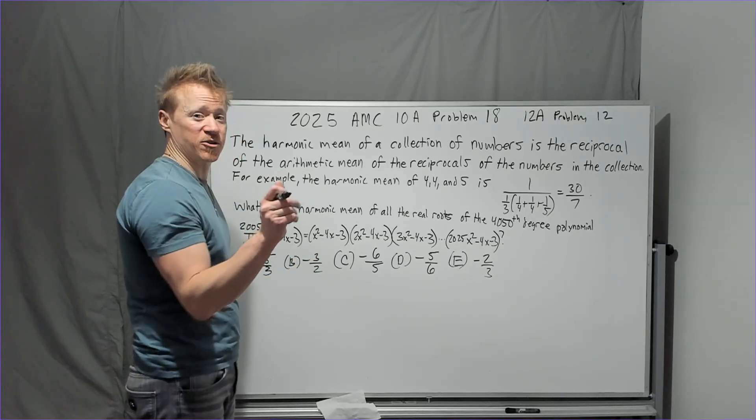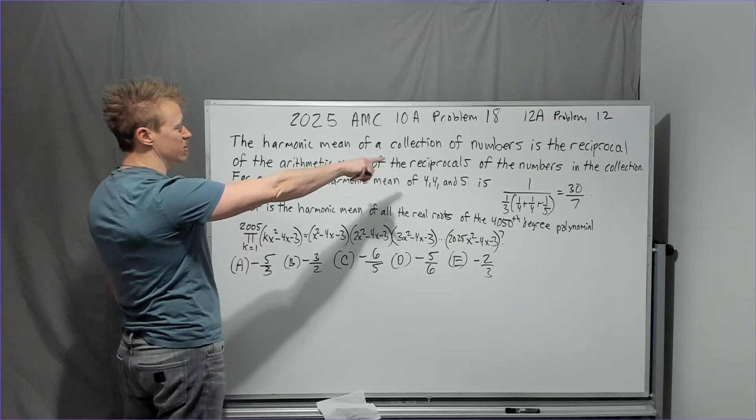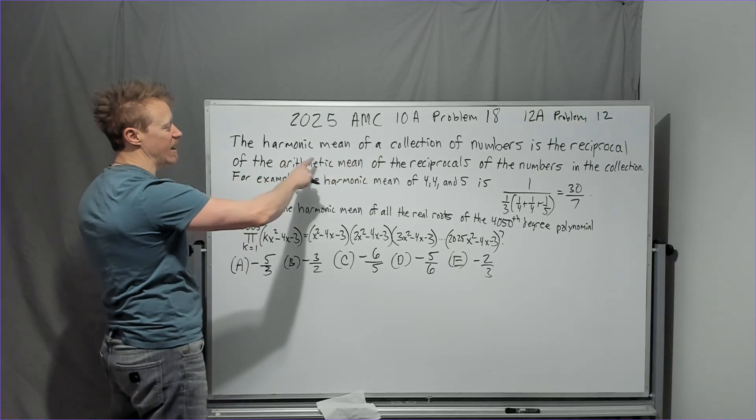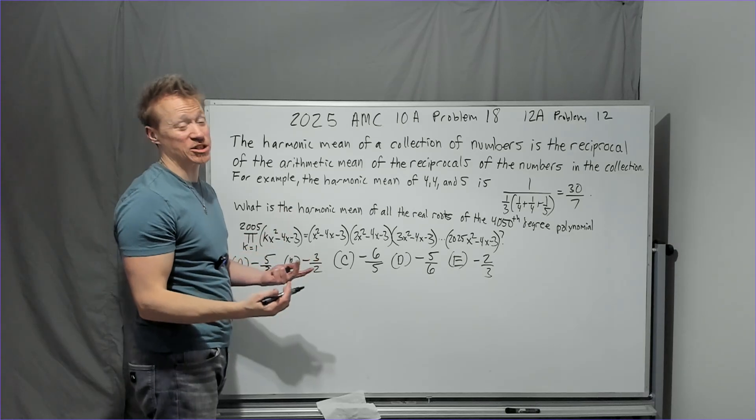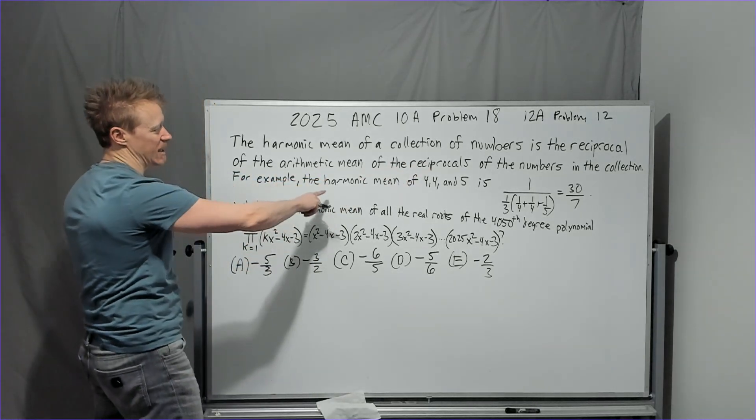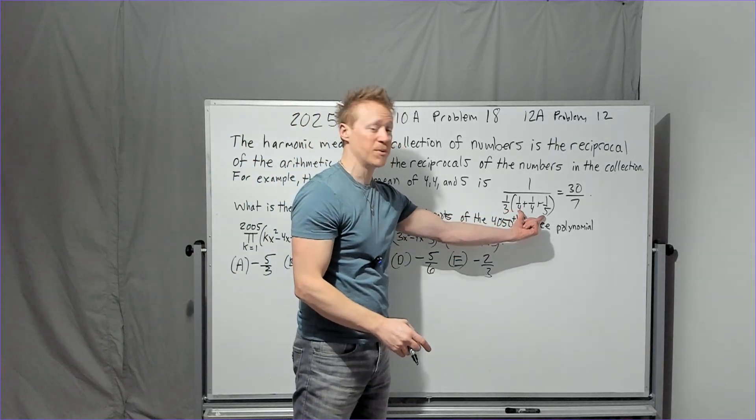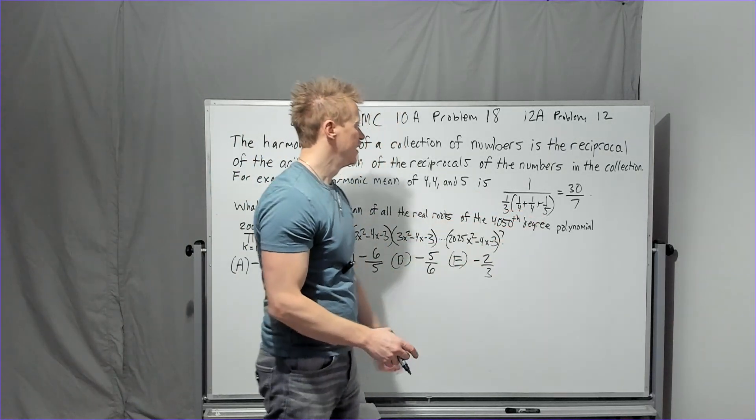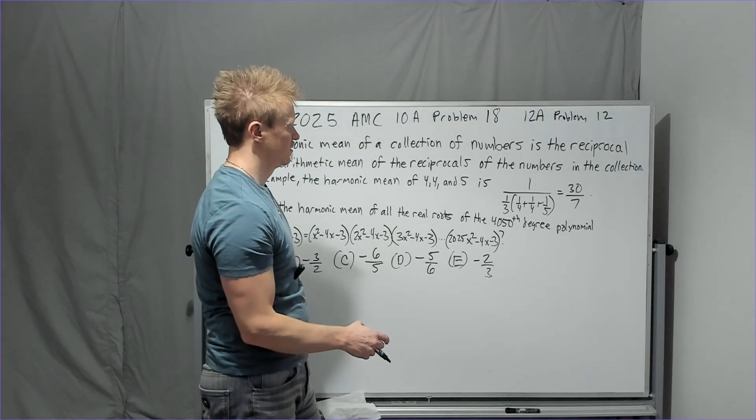The harmonic mean of a collection of numbers is the reciprocal of the arithmetic mean of the reciprocals. It's the reciprocal of the average of the reciprocals is a nice way to think of that in the collection. For example, the harmonic mean of this, you take one-third of the reciprocals, which is their average, and then it's, well, hold on.